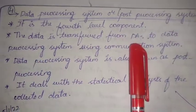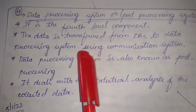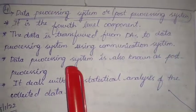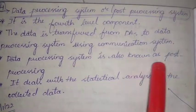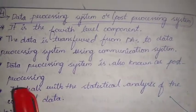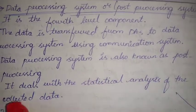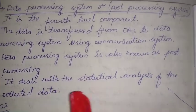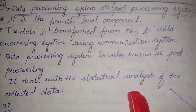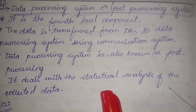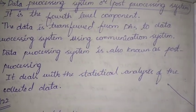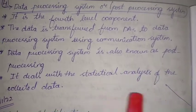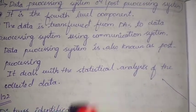The fourth component is the data processing system. Data is transferred from the data acquisition system to the data processing system using the communication system. The data processing system is also known as post-processing. It deals with statistical analysis of the collected data — statistically analyzing the data and showing graphical views such as pie charts, illustrating how the structure behaves under that load.